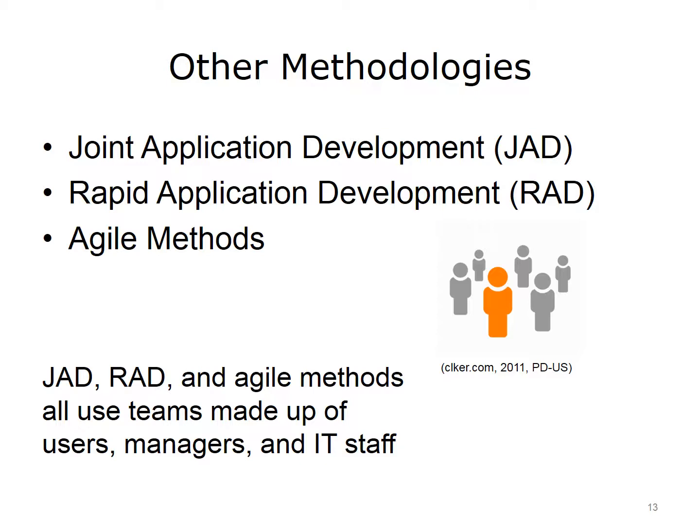Rapid Application Development, or RAD, is a more compressed version of the full systems development process. RAD refers to a software development methodology that uses rapid prototyping. Users are involved at every step by participating in prototyping, writing test cases, and performing unit testing. Agile development methods are currently popular. They are very similar to RAD in that they stress intense interaction between system developers and users. There are many different agile development methods. Most promote development, teamwork, collaboration, and process adaptability throughout the lifecycle of the project.